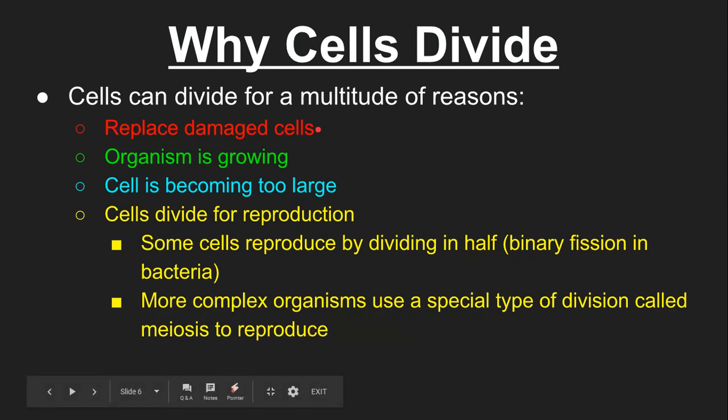If we're looking for four main reasons that cells divide: cells divide to replace damaged cells, it's like repair damage in the organism. They divide because the organism is growing, because the cells are becoming too large, and then just in general terms, they divide to provide for reproduction.